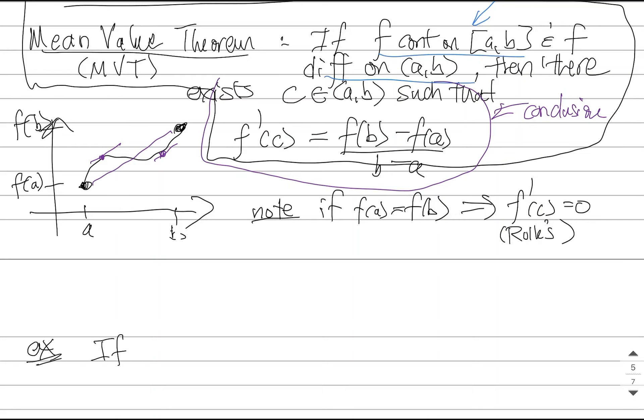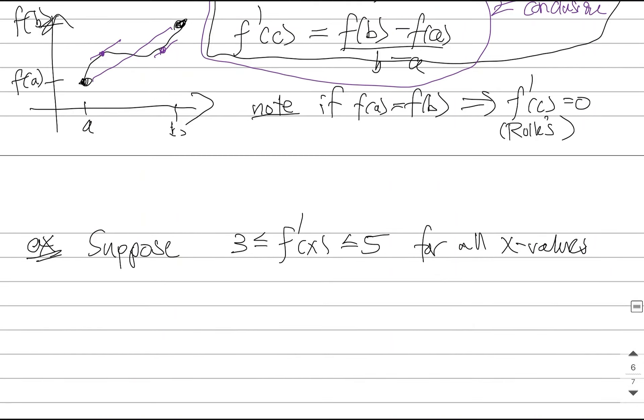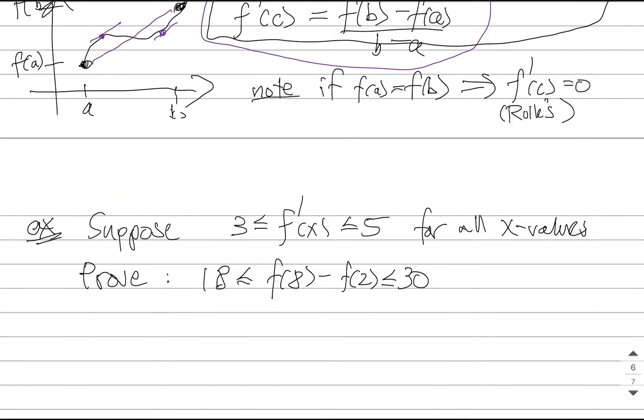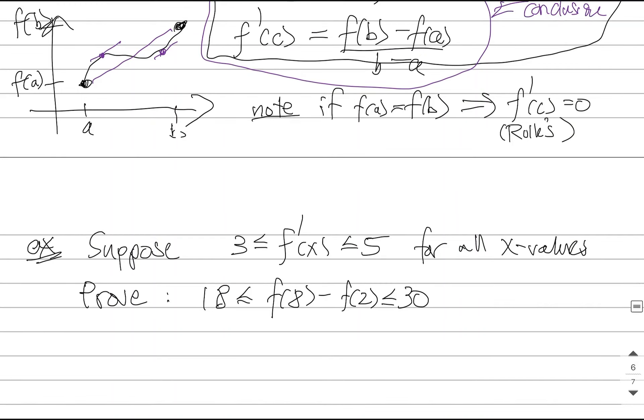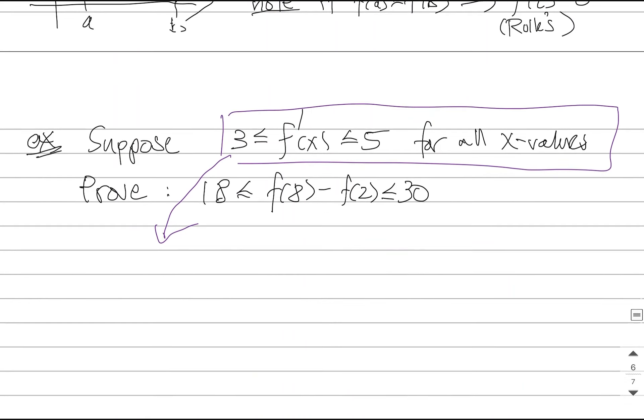Suppose I have a function where by some mystery, I know that the derivative is always between 3 and 5 for all x values, so for all real numbers. I would like to prove that the value of this mystery function, whatever it is, has this relationship. Now, in some way, this might seem crazy to you. How am I supposed to say anything about this function? All I know is that one little fact about its derivative. Well, knowing this fact about derivatives is really important, and that's what the mean value theorem is trying to impress upon you. That knowing something about a derivative can tell you a lot about a function.